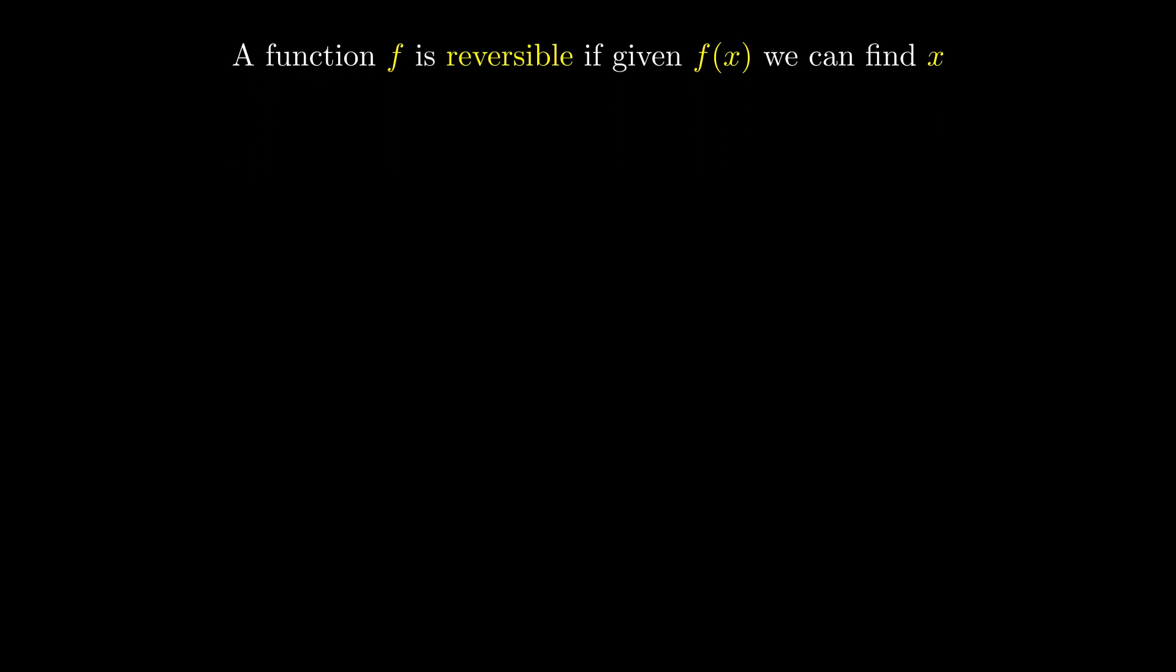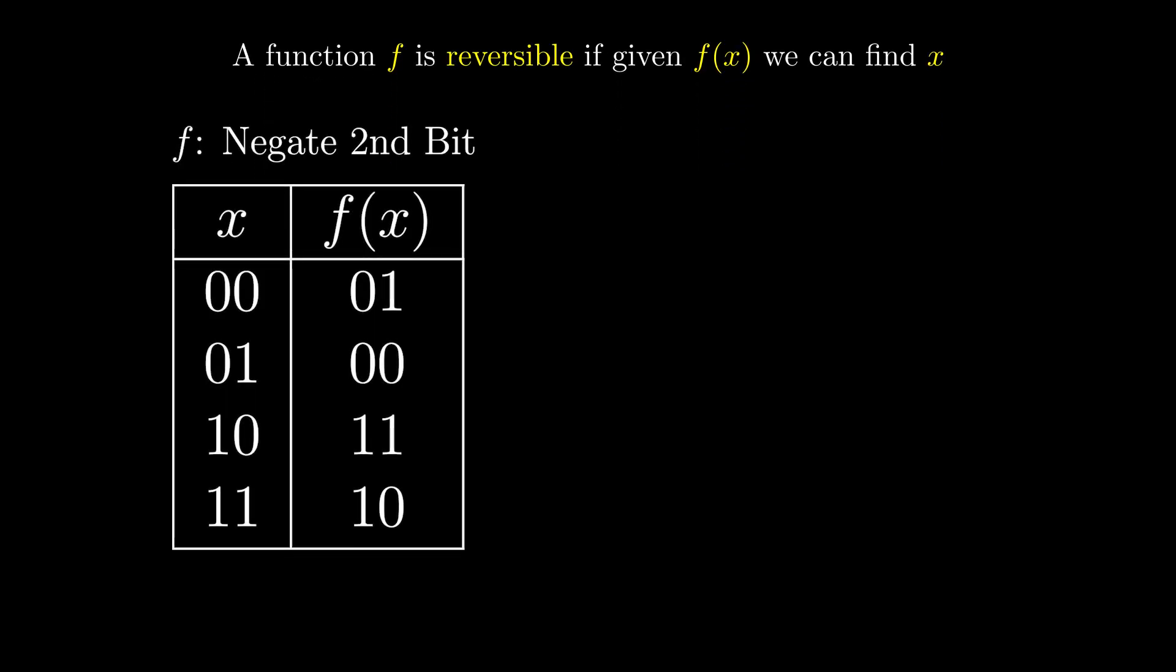So this function here, where we negate the second bit, is reversible, since each row of the truth table for this function is unique. So we can map each output to a unique input.